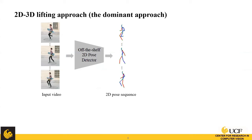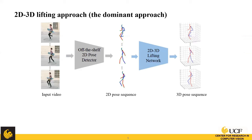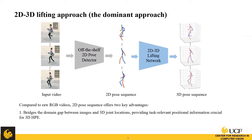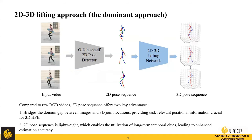Before introducing our method, here I want to briefly give background information about 3D HPE. The 2D-to-3D lifting approach has become the dominant approach for 3D HPE: given input videos, an off-the-shelf 2D pose detector extracts a 2D pose sequence, and then a 2D-to-3D lifting network outputs the final 3D pose sequence. Compared to raw RGB videos, 2D pose sequences offer two key advantages: they bridge the domain gap between images and 3D joint locations, and the lightweight sequence enables the utilization of long-term temporal cues, leading to enhanced estimation accuracy.